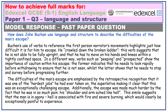Buchan's use of verbs to reference the first person narrator's movements highlights just how difficult it is for him to escape. He crawled down the broken ladder — this verb suggests that he is not able to be fully upright and has to move on his hands and knees within a tightly confined space. In a different way, verbs such as 'peeping' and 'prospected' show the importance of caution within his escape. The former indicates that he needs to look rapidly before withdrawing to ensure that he is not seen, whilst the latter shows that he needs to stop and survey before progressing further. The difficulties of the man's escape are emphasised by the retrospective recognition that it was one of the hardest jobs he had ever taken on, the superlative making it clear that this was an exceptionally challenging escape. Additionally, the escape was made much harder by the fact that he was in so much pain — his shoulder and arm ached like hell. This simile suggests that the man is in agony; hell is associated with fire and severe burning, which would clearly be exceptionally painful to experience.